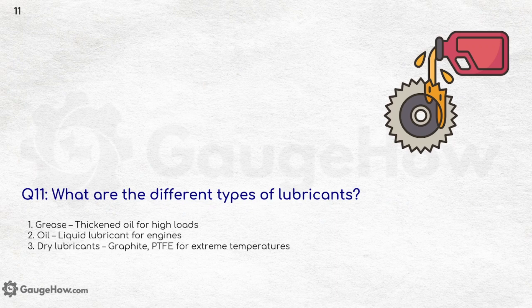What are the different types of lubricants? There are three types: grease, which is thickened oil for high loads; oil, which is a liquid lubricant for general use; and dry lubricants such as graphite and PTFE, used for extreme temperatures.